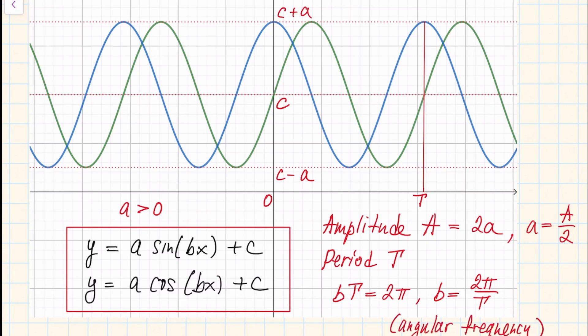In any case, by looking at the graph of these functions you can find this constant c by looking at the shift, and you can find the constant a by looking at the amplitude or maximum and minimum value. Finally, you can find the constant b by looking at the period of these functions. Next, let's look at one particular example.